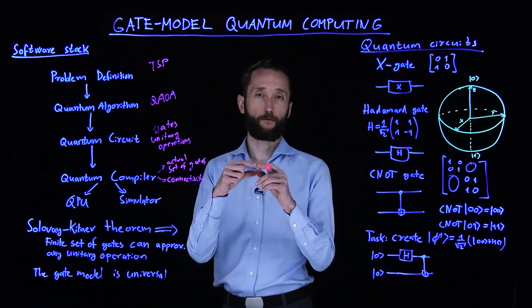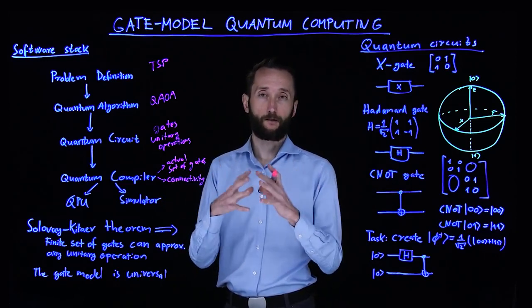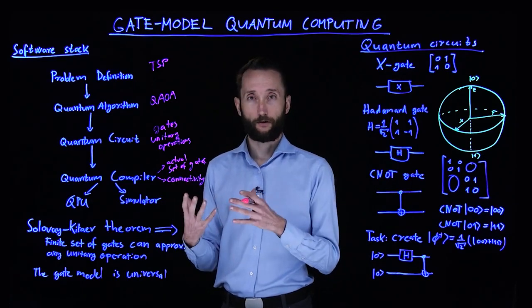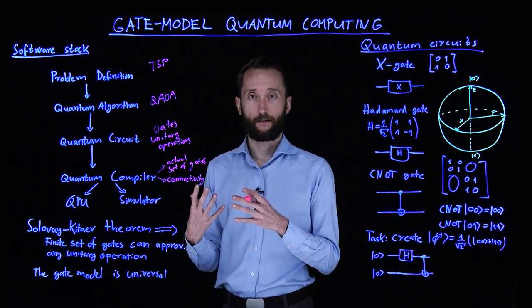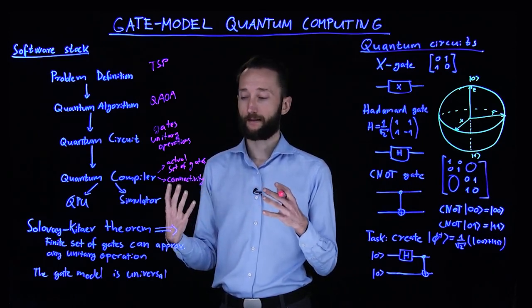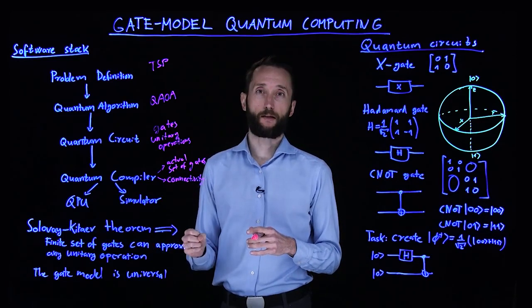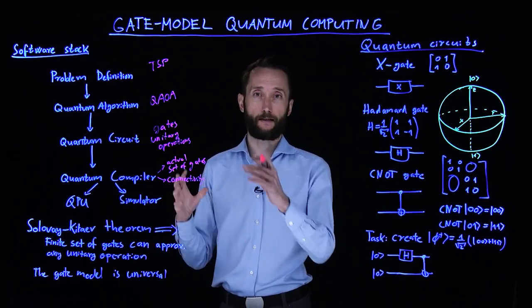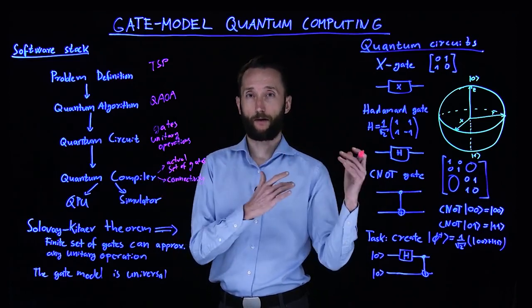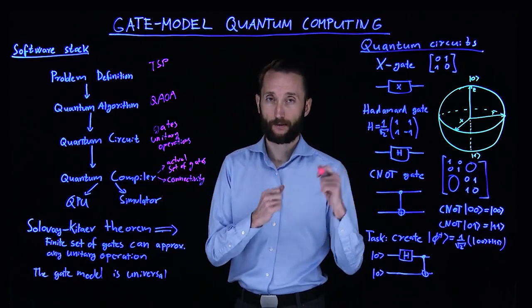A digital computer is universal in the sense that it can implement any logical operation between strings of bits, whereas a quantum computer is universal in the sense that it can take any quantum state over qubits and transform it into any other quantum state over qubits.